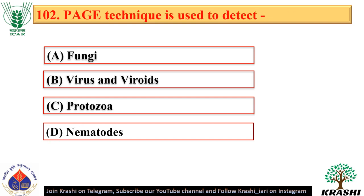Question number 102. PAGE technique or polyacrylamide gel electrophoresis is used to detect viruses and viroids — option B.